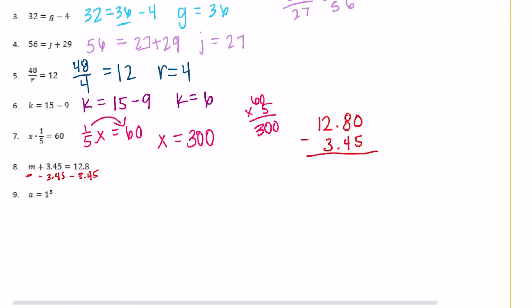Okay, so we can't do 0 minus 5, but 10 minus 5 is 5. 7 minus 4 is 3. Bring down our decimal point. Can't do 2 minus 3, but 12 minus 3 is 9. So we get 9 and 35 hundredths. So m—9 and 35 hundredths—plus 3 and 45 hundredths would be equal to 12 and 8 tenths.